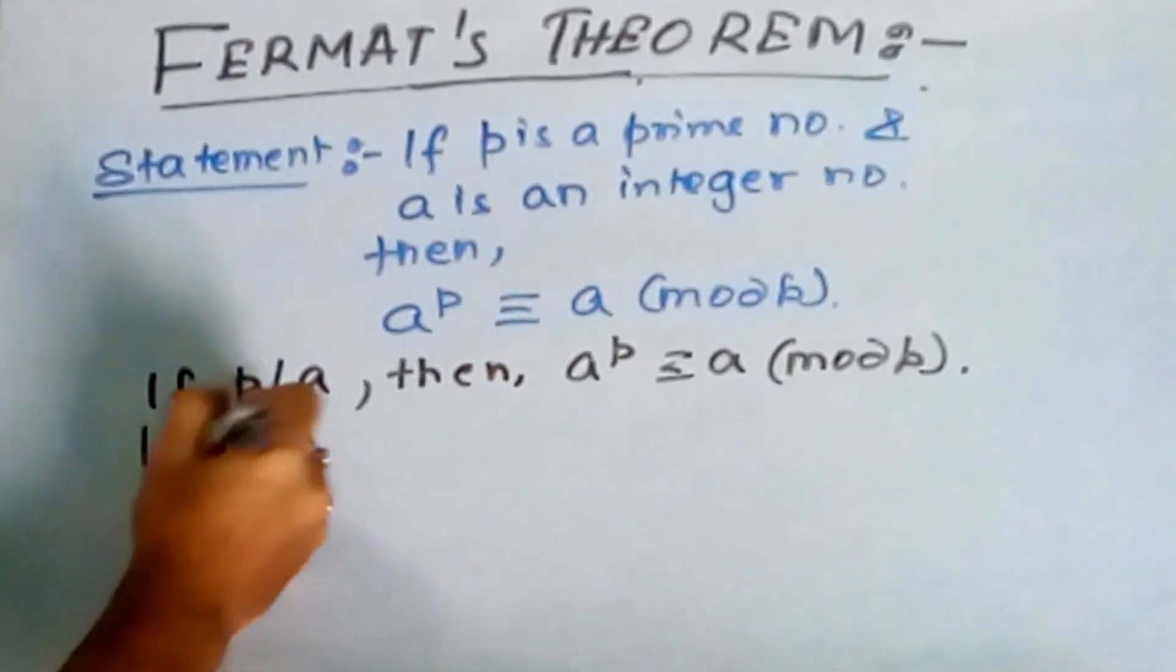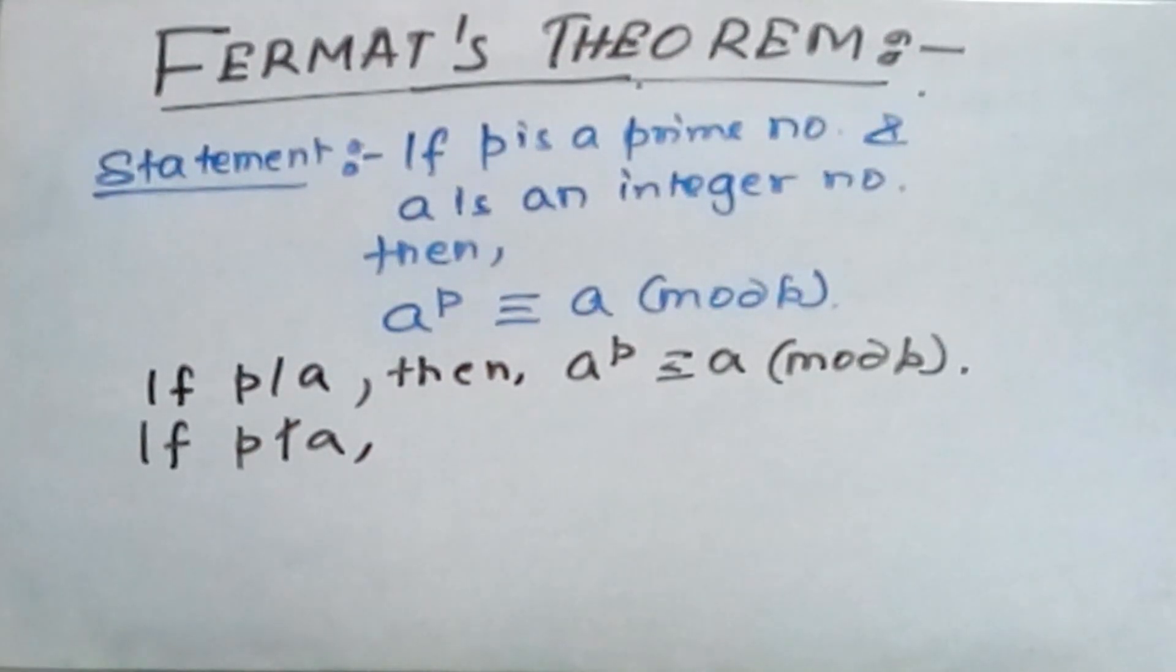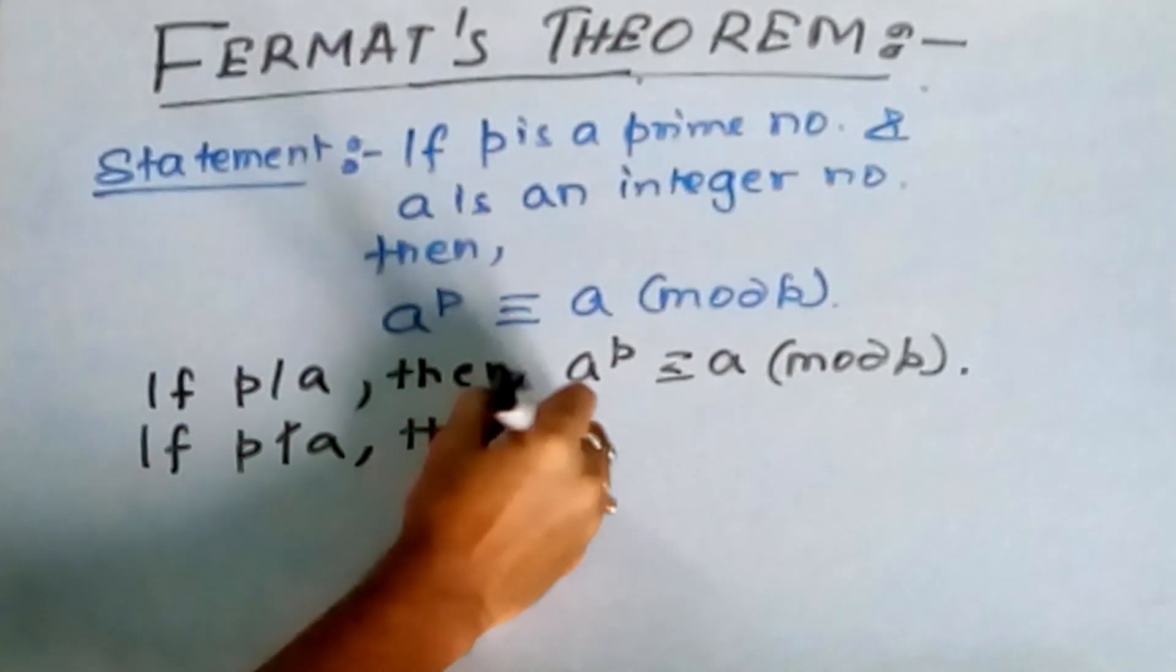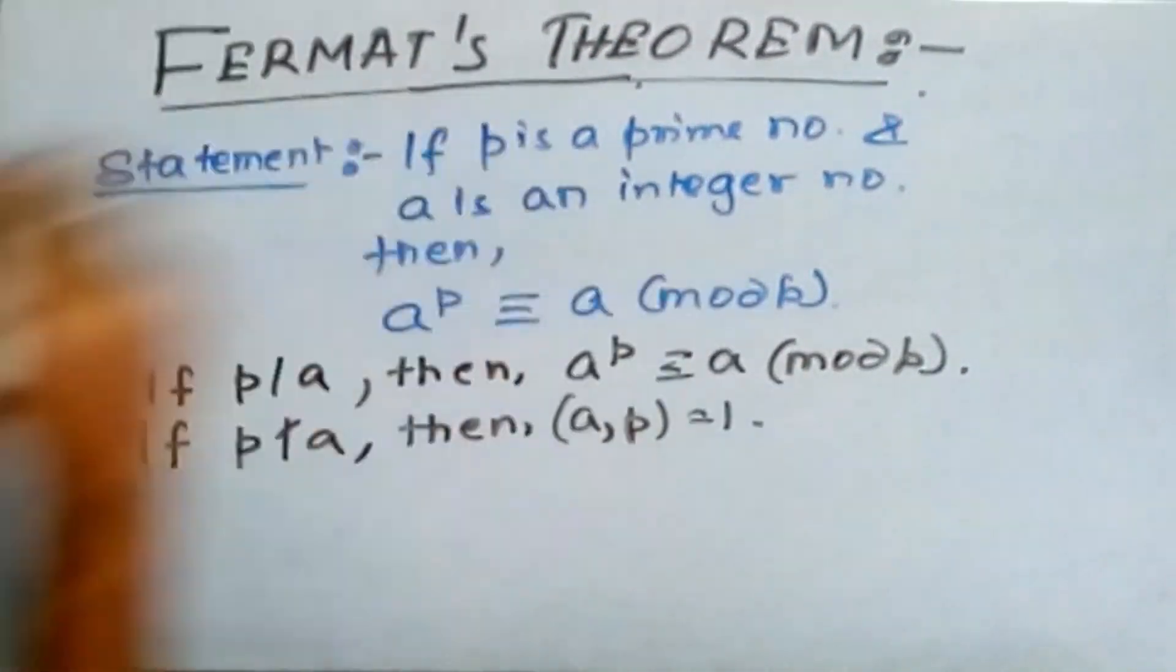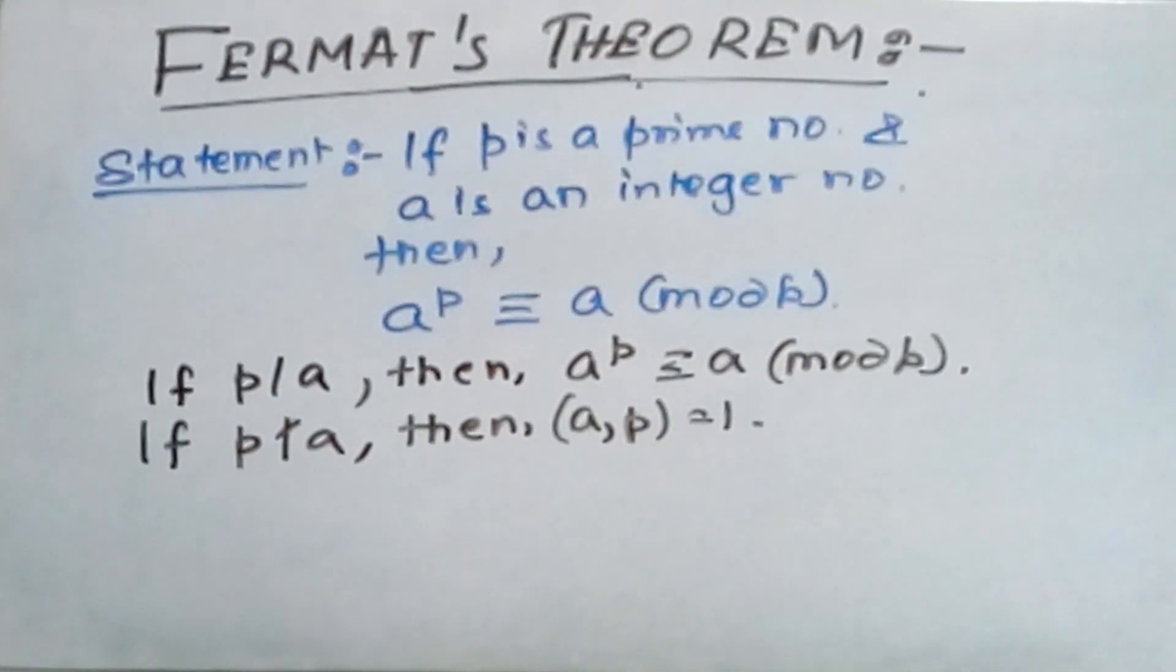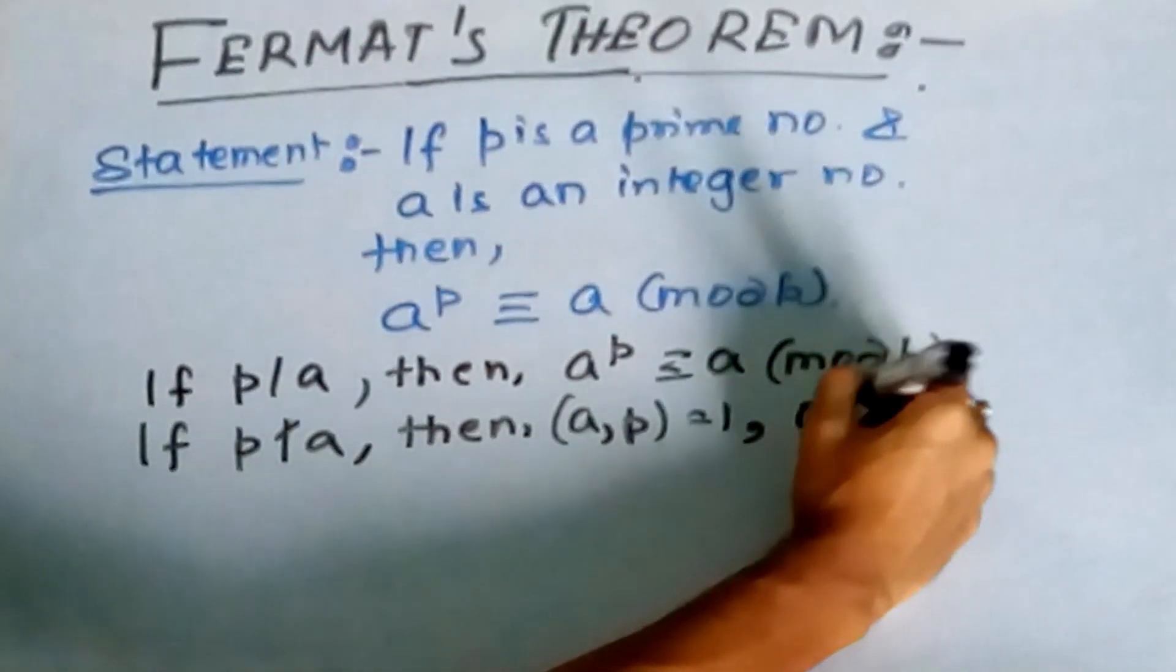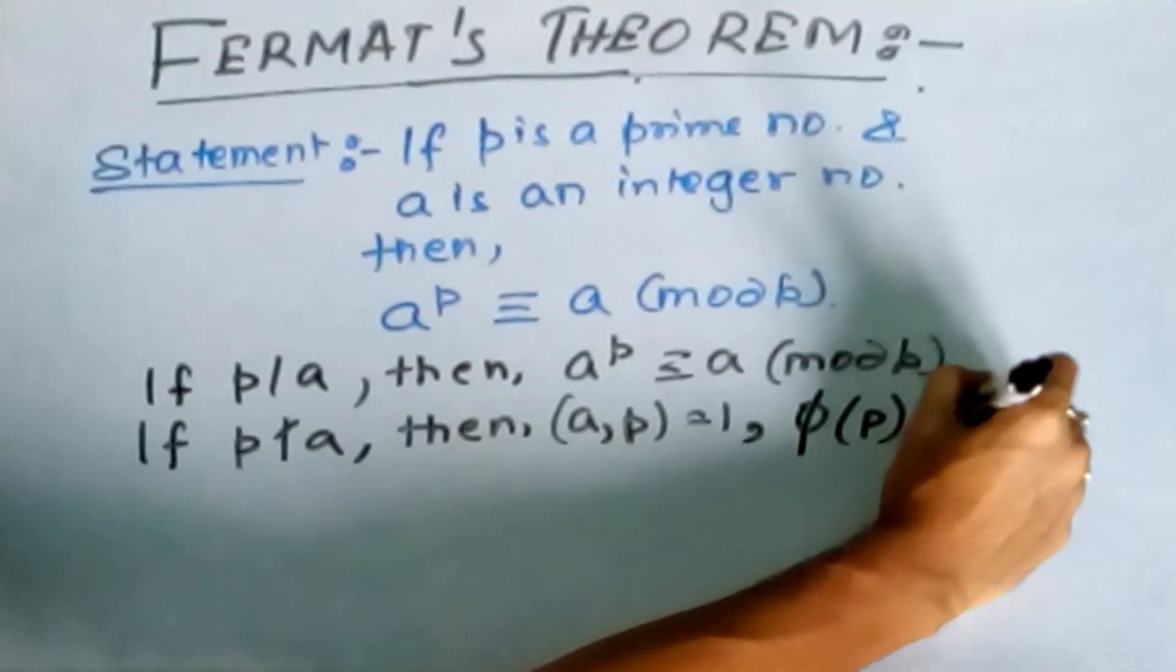Now if p is not divisible by a, then gcd of a comma p is equal to 1. And we know that by Euler's theorem that phi of p, that is Euler number of a prime number, is nothing but p minus 1.